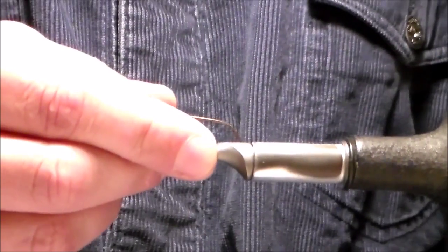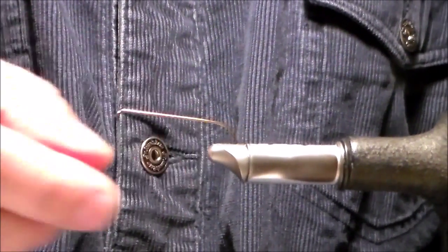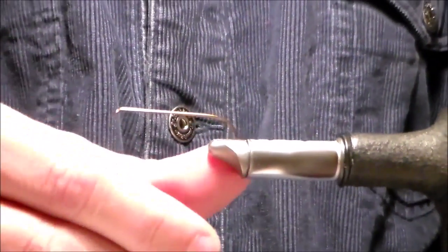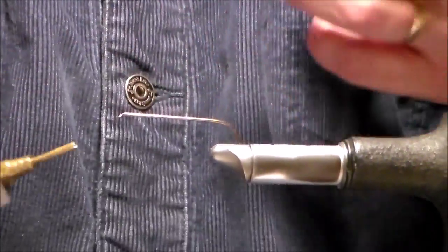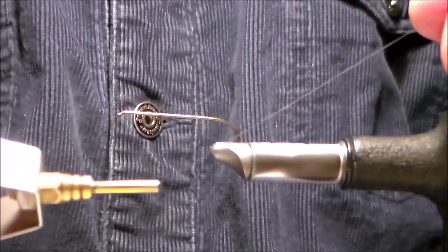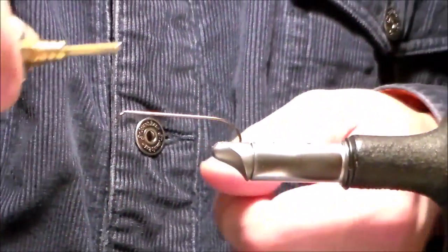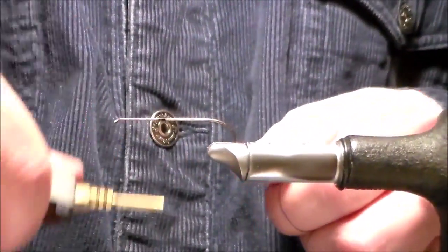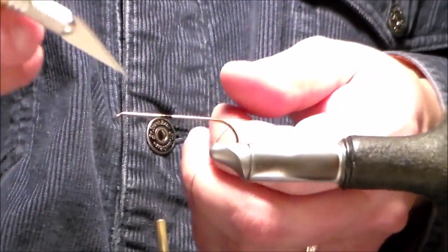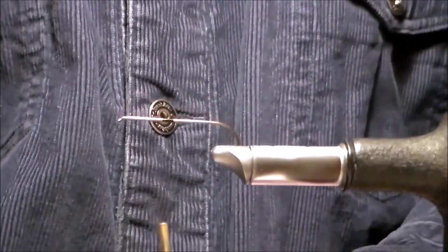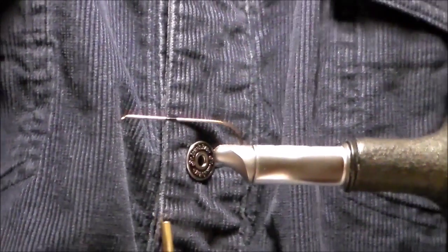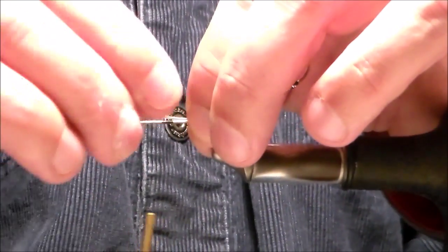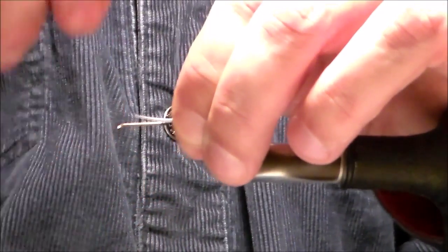There you have it. Take that main hook, which is a Mustad 3665A number 4 size 4, place it in our vise. I am going to again use my size A thread and I'm going to start a wrap about a third of the way down the shank. Give it half a dozen turns or so just to lock it on. We can return to that trailing hook, laying that mono right on top.